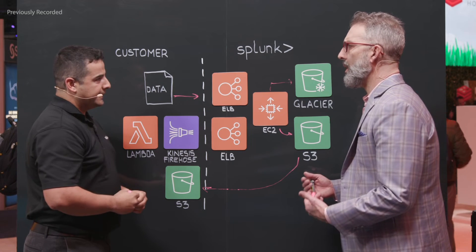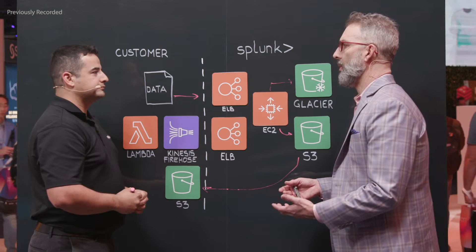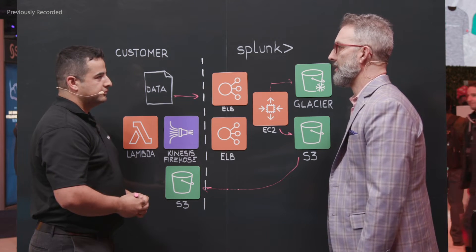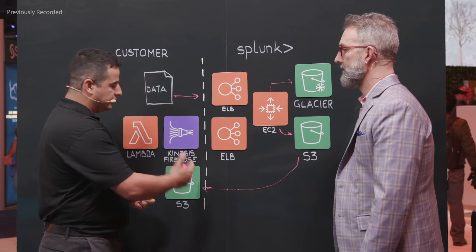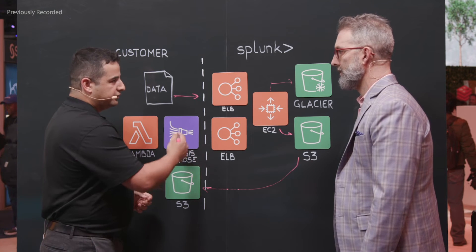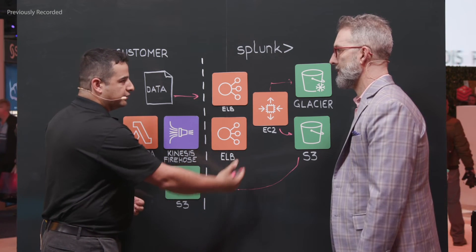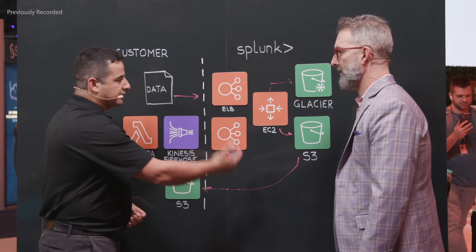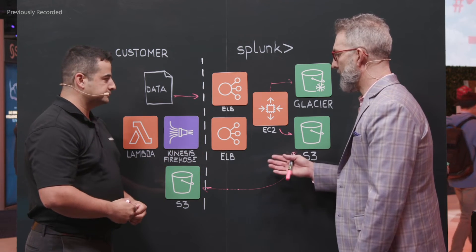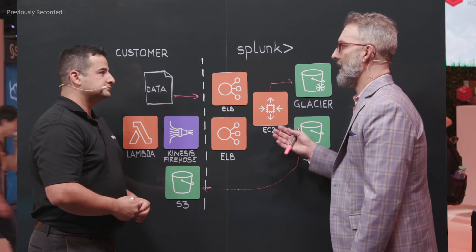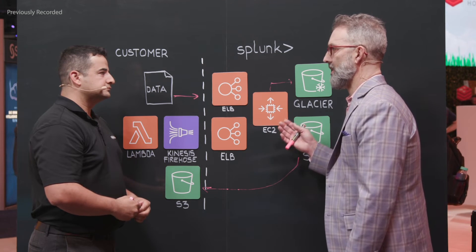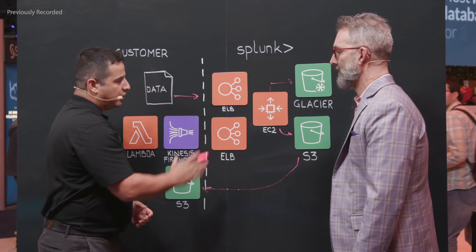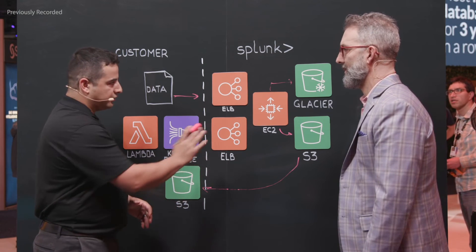Looking forward to the future, what would you like to add to this architecture? One of the things we're looking at is using Private Link — allowing customers to essentially send their data directly to Splunk without traversing the public gateway, so they can have their data show up directly inside their VPC. And each customer does get their own dedicated stack, so all their servers, indexers, and search heads are all their own.